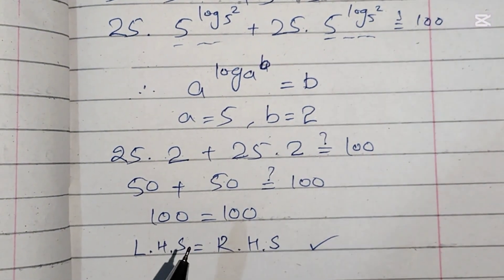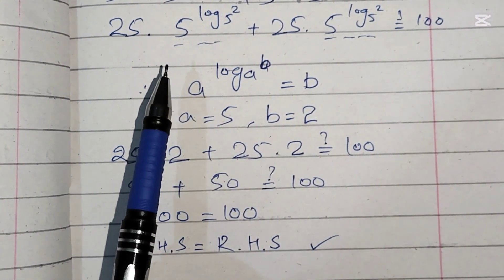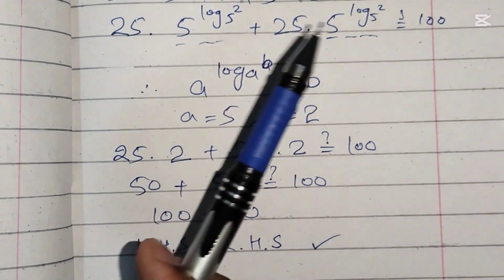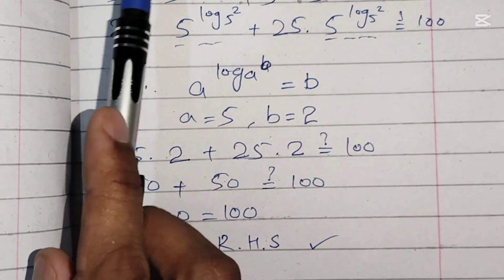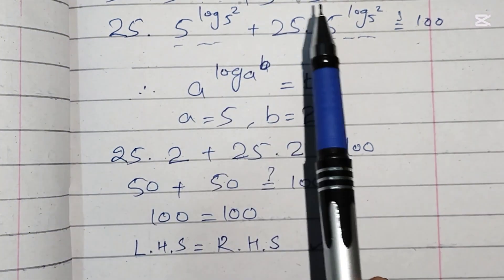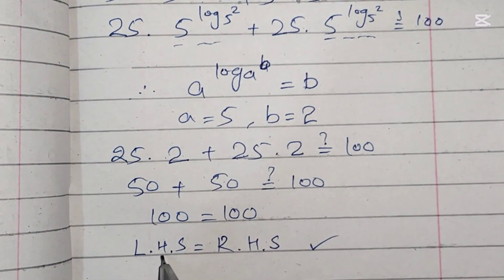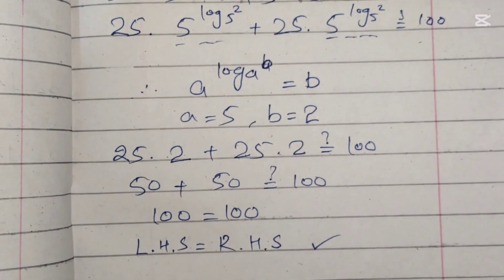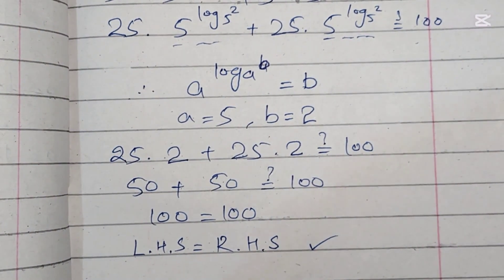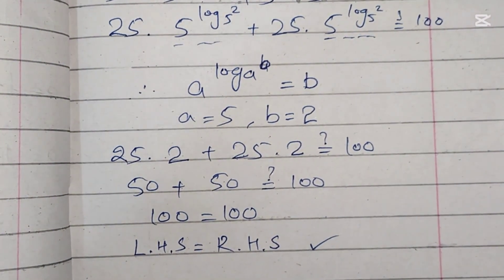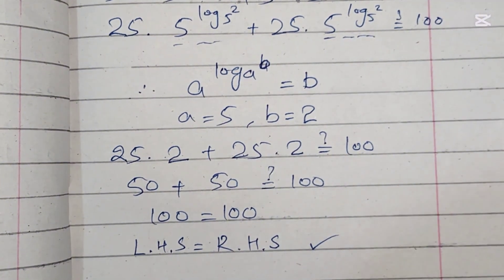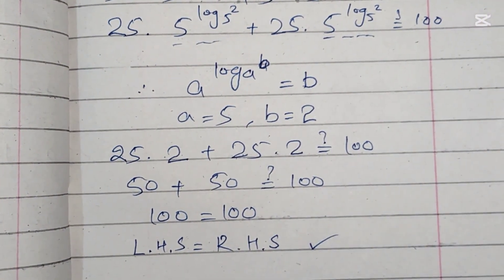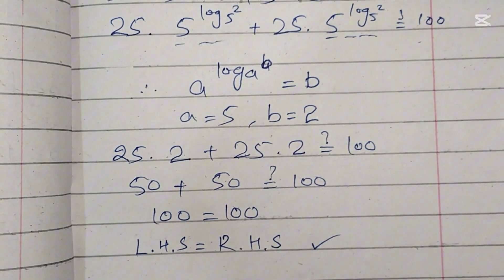So the summary is that we found the value of a by doing a number of steps and using logarithm formulas, and then by putting this value of a back in the question we confirmed that left hand side equals right hand side. I hope you understand this video. If you like my video then please like, share, comment, and subscribe to my channel, and don't forget to press the bell icon so you can get notifications of my new videos. Thank you for watching.